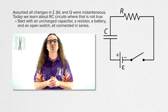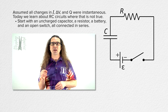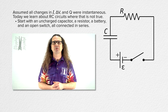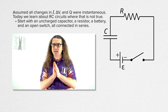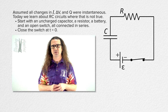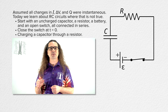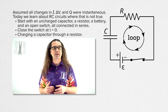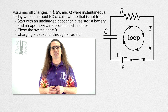We start with a circuit composed of an uncharged capacitor, a resistor, a battery, and an open switch, all connected in series. At time initial, or time equals zero, we close the switch. This is called charging a capacitor through a resistor. Let's start by adding a loop in the direction of current flow in the circuit, which is clockwise.